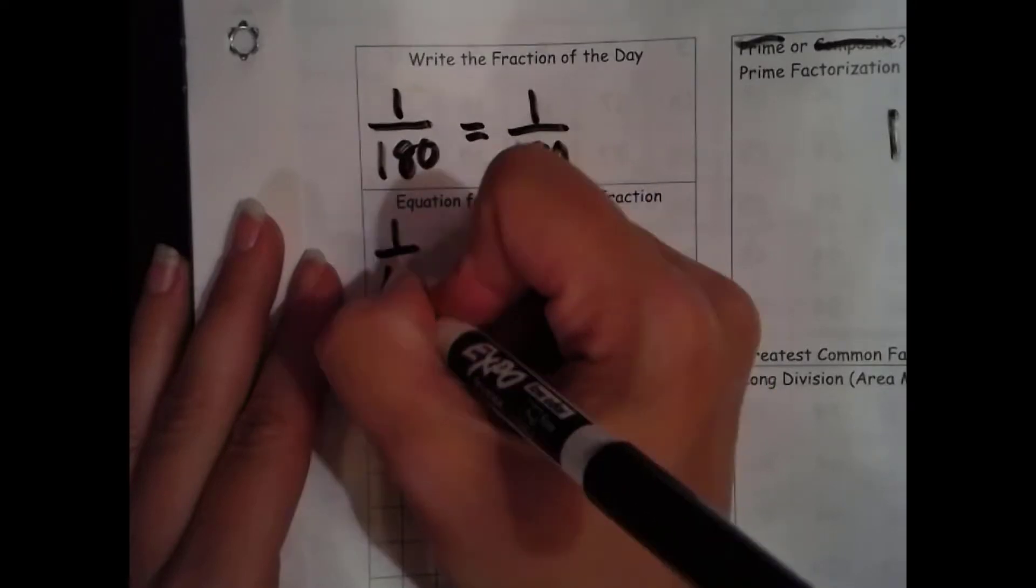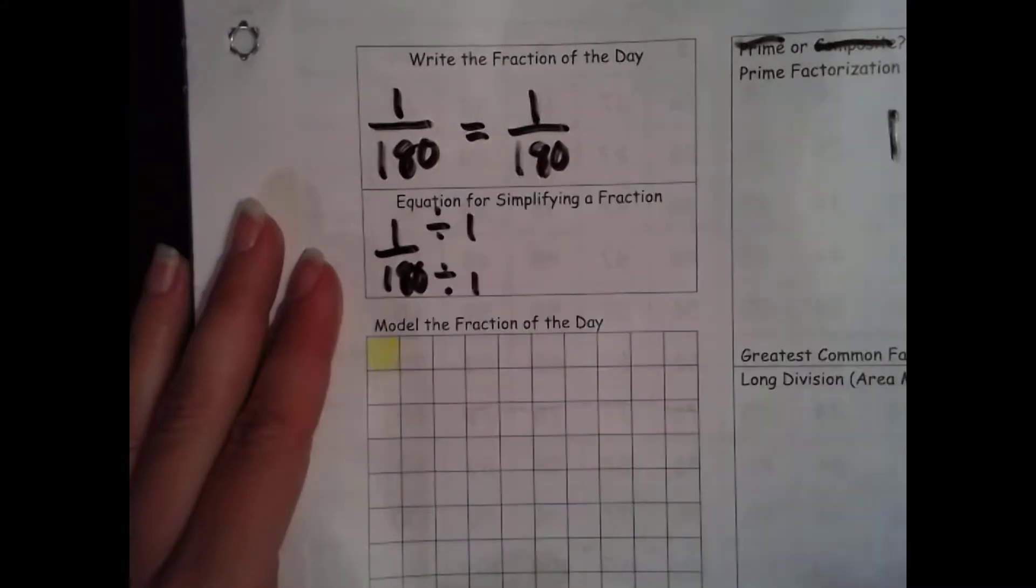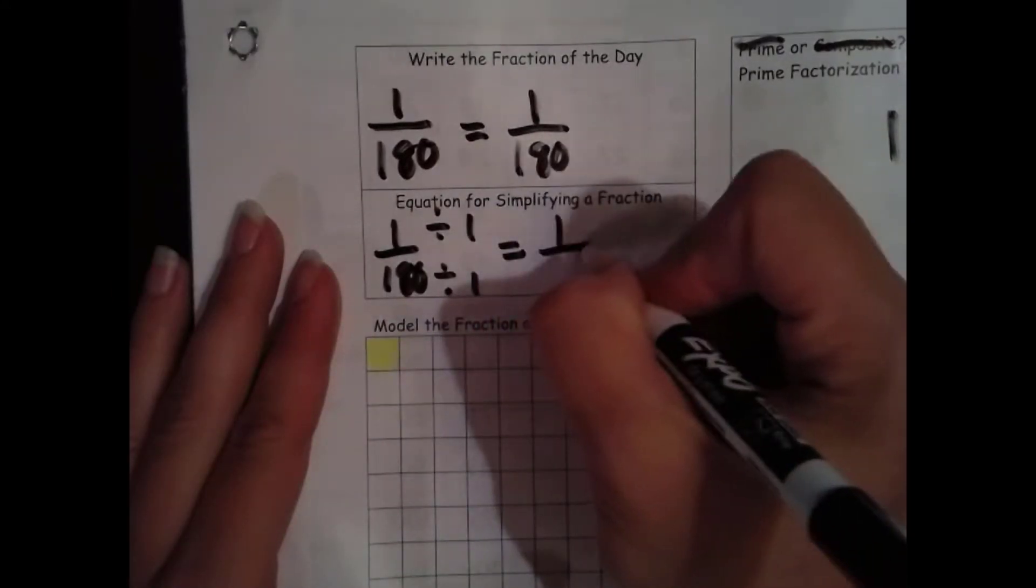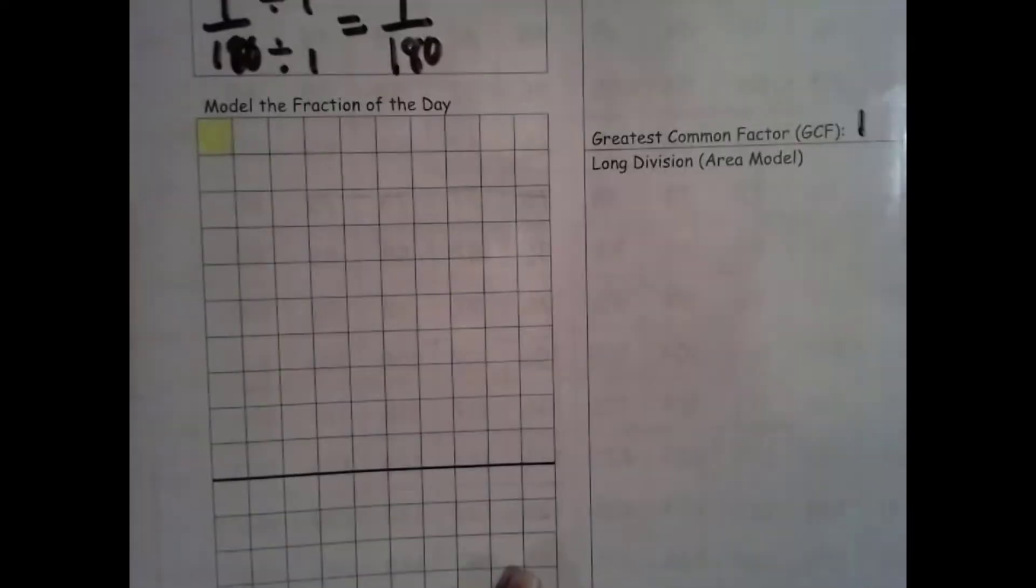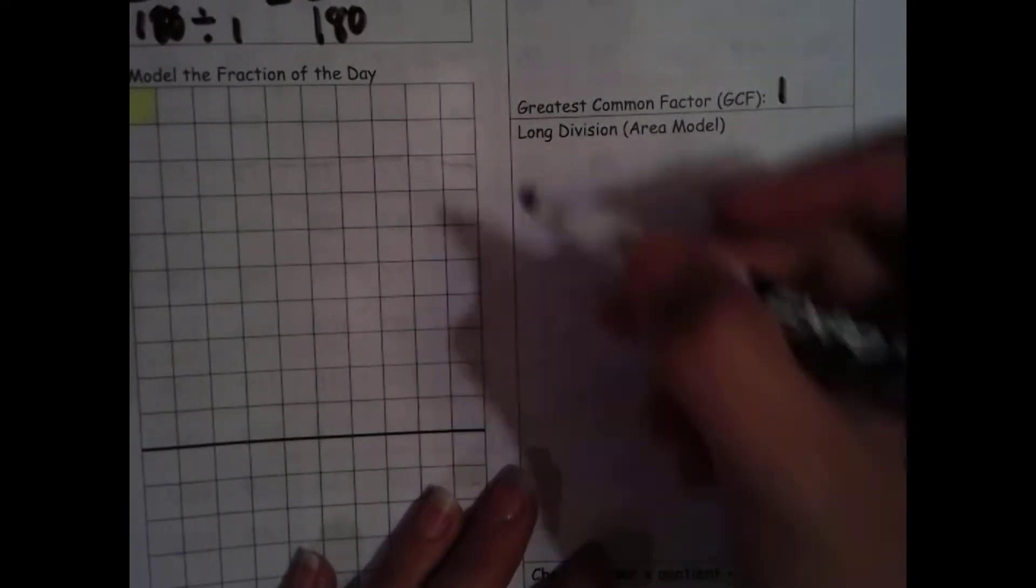And if we divide by 1, our numerator divided by 1 stays the same. 180 divided by 1 is 180. This time, instead of doing partial quotients, we're going to use the area model.